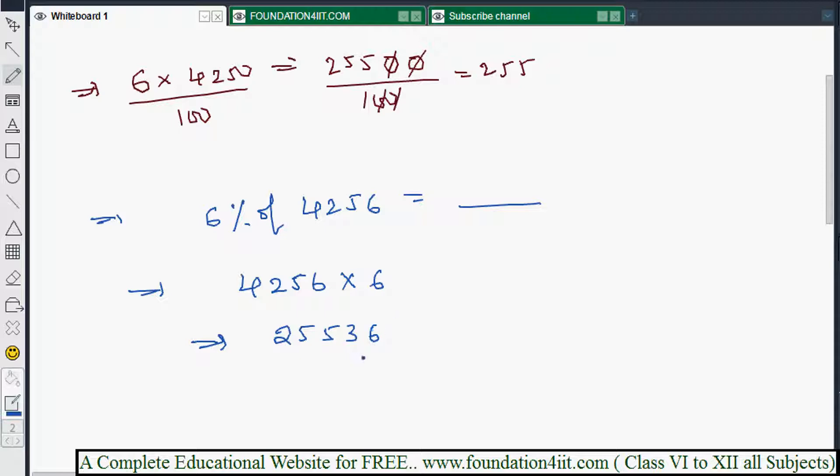Now what we'll do is keep... we need to divide by 100. So instead of dividing by 100, leave two decimal places and keep the point. Actually this value we need to divide by 100 because 6% means divide by 100. So for this, 255.36. That means two decimal places we need to keep from the right side. Leave it and keep the point.